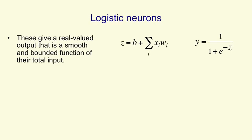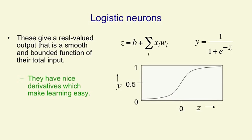It then gives an output y that's a smooth non-linear function of that logit. As shown in the graph, that function is approximately zero when z is big and negative, approximately one when z is big and positive, and in between it changes smoothly and non-linearly. The fact that it changes continuously gives it nice derivatives which make learning easy.